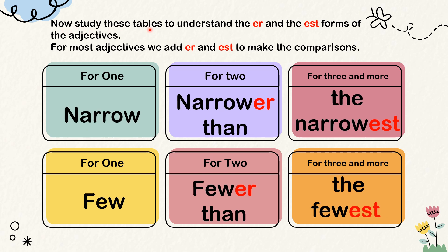Now study these tables again. For most adjectives, we add ER and EST to make comparisons. Narrow, narrower than, the narrowest. The road is narrow. The footpath is narrower than the road. The footpath is the narrowest.